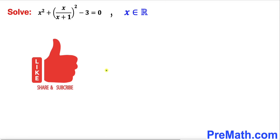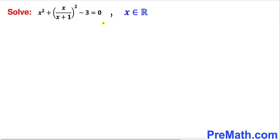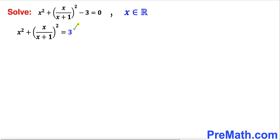Please don't forget to give a thumbs up and subscribe. Let's get started with the solution. The very first thing we are going to do is move the negative 3 to the right hand side, where it becomes positive 3.